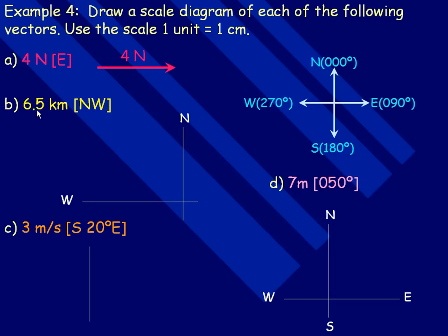In B, 6.5 kilometers, and NW stands for northwest, which means the angle exactly in between north and west. So there's north, there's west. So northwest would look like this. There would be a 45 degree angle between either the angle, the vector, and the west, or the vector in the north. And of course, I would want to draw this 6.5 centimeters long.